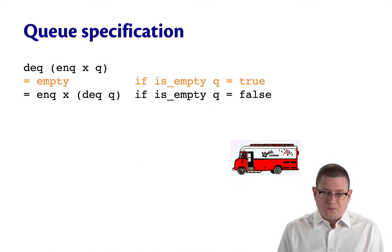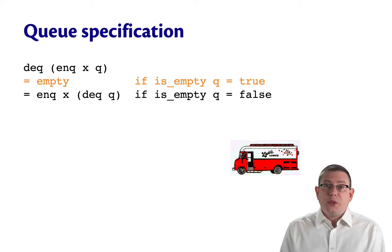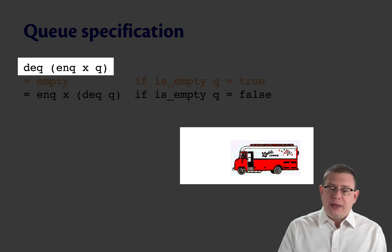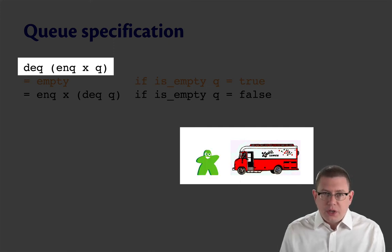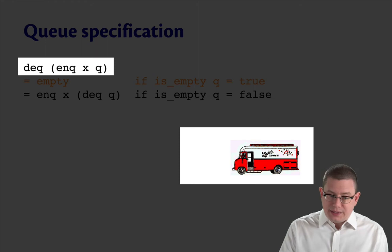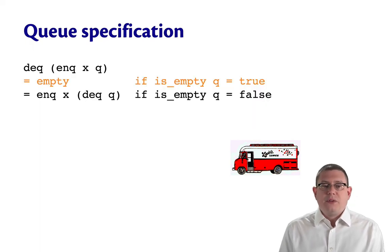What about the fourth equation? Suppose once more that you arrive at the food truck and the queue is empty, there's no one else there. Then after being enqueued, so you get enqueued on the queue first, then being dequeued, the queue is going to be empty. So that's what the first half of this equation is telling us.